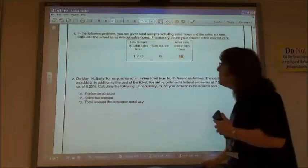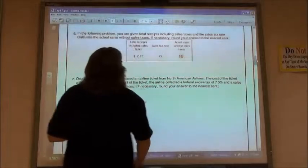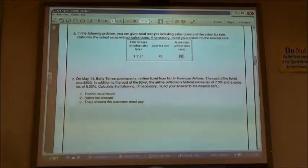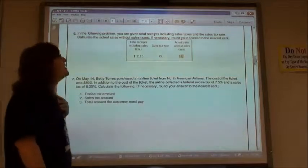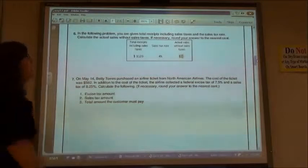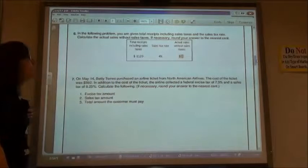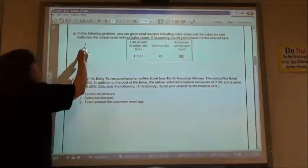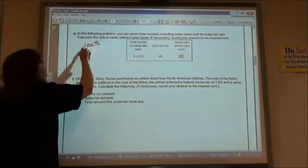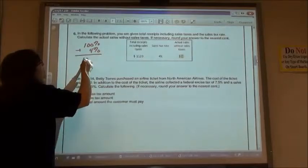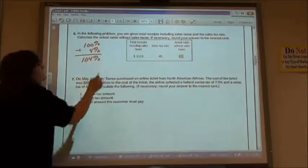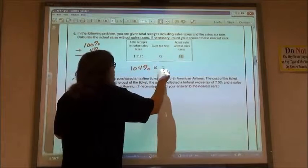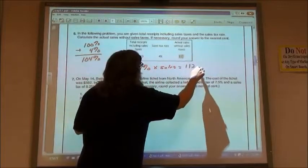So number six is the same kind of thing. The following problem, you're given the total receipts that includes the sales tax and the sales tax rate. You're trying to figure out what the sales were without the sales tax added on. We know our total sales plus sales tax was $1,120. Our sales tax rate was 4%. So the 100% of the sales plus the 4% in tax means we have 104%. So 104% times our sales equals the $1,120.